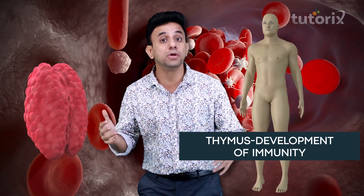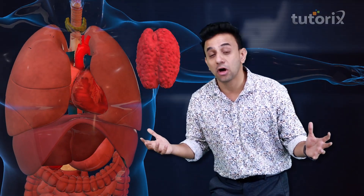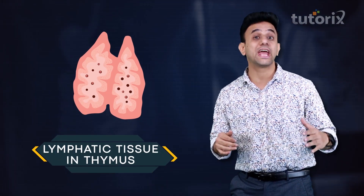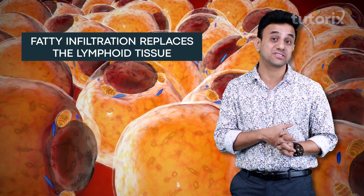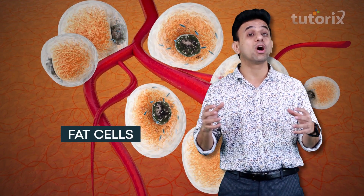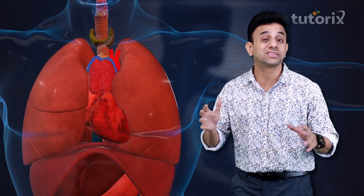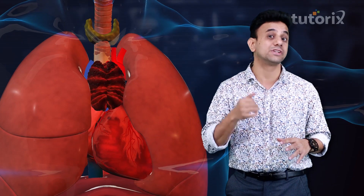In a living body, the thymus gland has a reddish appearance due to the presence of lymphoid tissue and a rich blood supply. However, with advancing age, the red color changes to yellow because fatty infiltrations replace the lymphoid tissue. This replacement gives the false impression of a reduced size of the thymus gland, but the size does not actually change — it is defined by its connective tissue capsule.